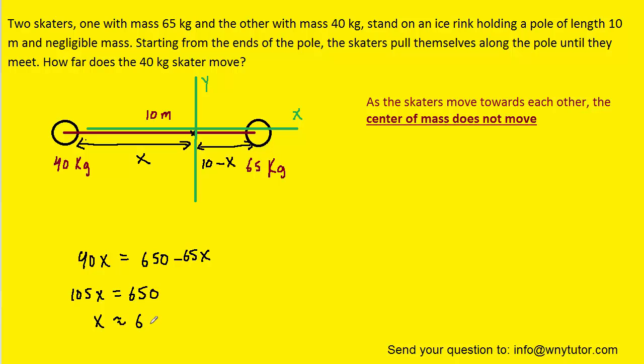we get roughly 6.2 meters as the correct answer for x. So that represents the distance, again, from the center of mass to that 40 kilogram skater. And as the skaters pull themselves towards each other, they will meet at the point of center of mass. So the correct answer will be that x value of 6.2 meters.